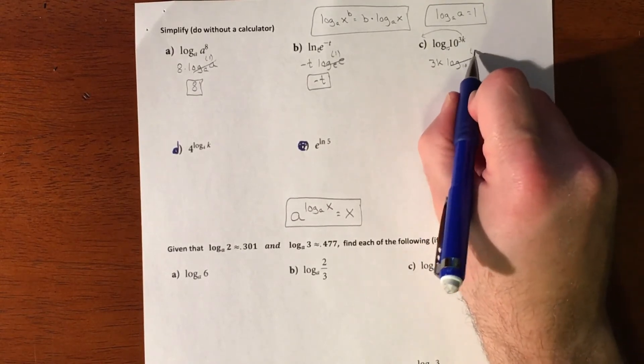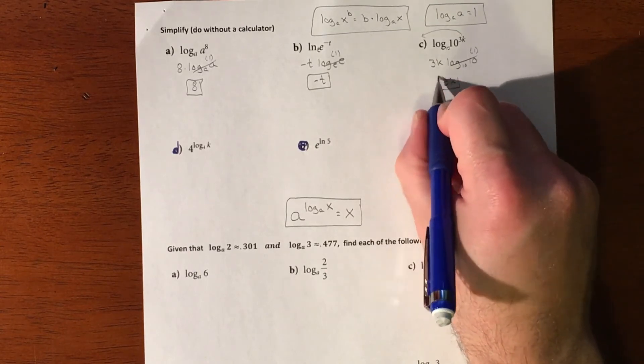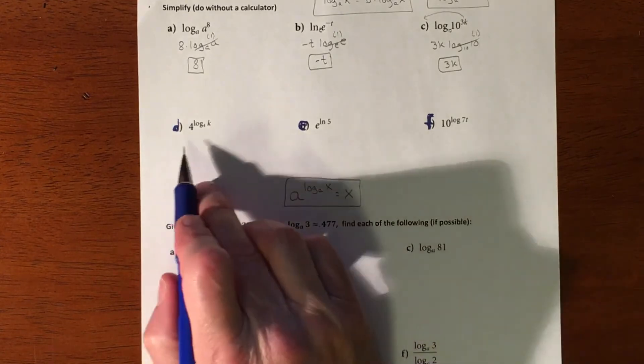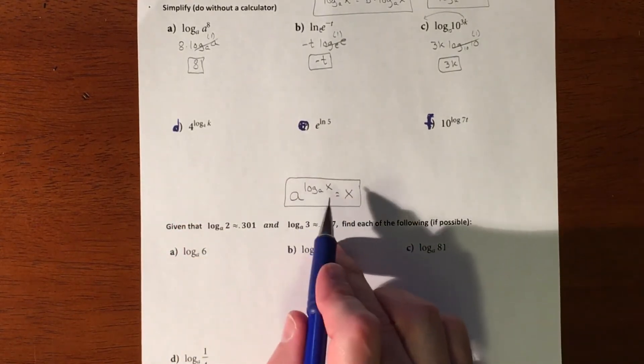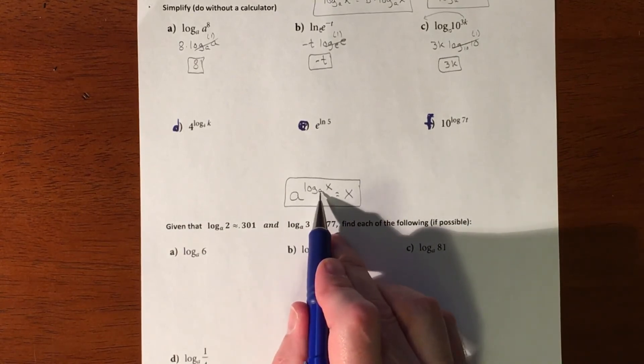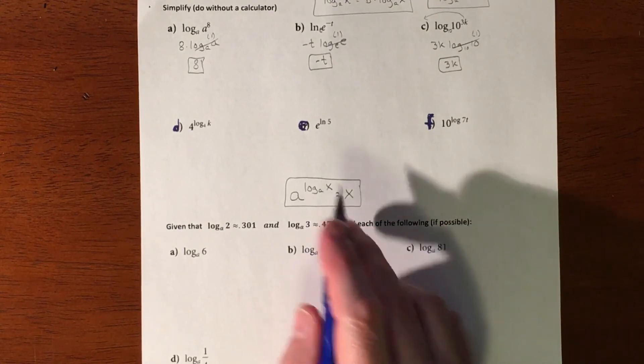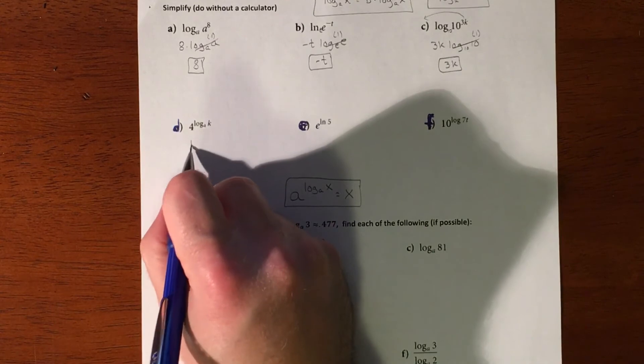And then another look is when you have an exponential mixed with a log. It actually pretty frequently happens where the base of your exponent matches the base of your log. So if that is the case, it actually just ends up equaling whatever the value is associated with the log. So it's not at all a coincidence that 4 matches that 4, so that's just going to equal k.